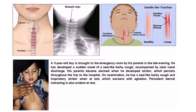To finish, here's a clinical vignette: a three-year-old boy is brought to the emergency room by his parents in the late evening. He has developed a sudden onset of seal-like barky cough accompanied by clear nasal discharge. His parents became alarmed when he developed stridor, which persisted throughout the trip to the hospital. On examination, he has a seal-like barky cough, inspiratory stridor at rest that worsens with agitation, and persistent sternal in-drawings at rest. This is obviously a clinical vignette describing croup.